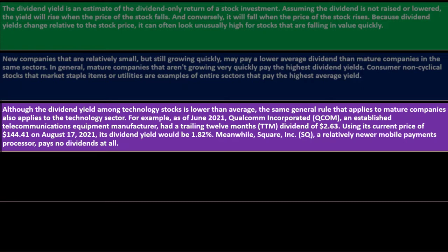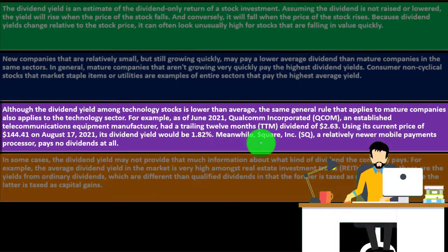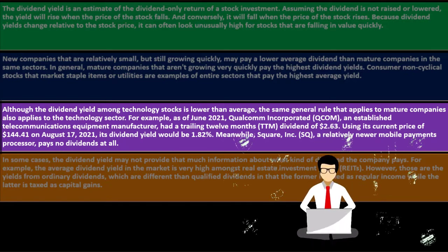Although the dividend yield among technology stocks is lower than average, the same general rule applies: mature companies pay more. For example, as of June 2021, Qualcomm Incorporated (QCOM) — an established telecommunications equipment manufacturer — had a trailing 12-month (TTM) dividend of $2.63. Using its current price of $144.41 on August 17, 2021, its dividend yield would be 1.82%. Meanwhile, Square Incorporated (SQ), a relatively newer mobile payment processor, pays no dividends at all, as Square is focused on growth whereas Qualcomm, already established, can return earnings to owners.